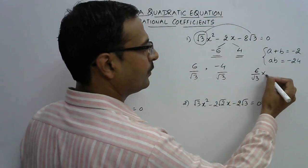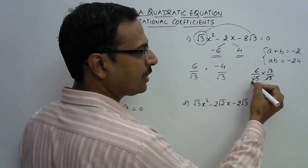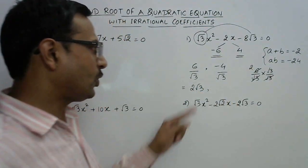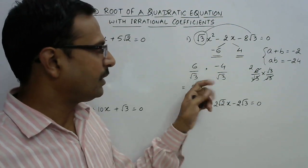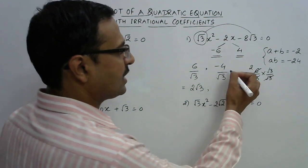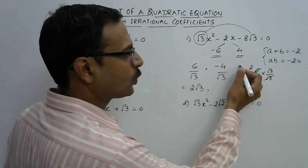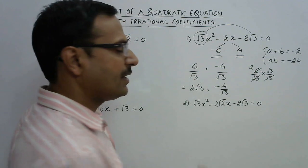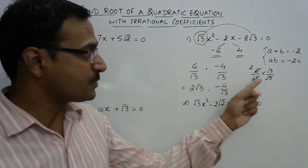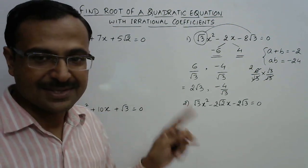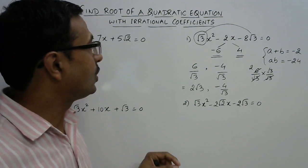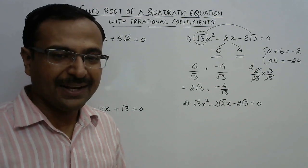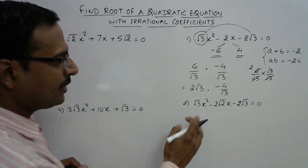Rationalizing 6/√3 by multiplying by √3 gives 6√3/3, and 3 cancels with 6 giving 2√3. For minus 4/√3, rationalizing gives minus 4√3/3. So the two solutions or roots of this quadratic equation are 2√3 and minus 4/√3. That simplifies to minus 4√3/3 in rationalized form. Now let's have one more question for practice.